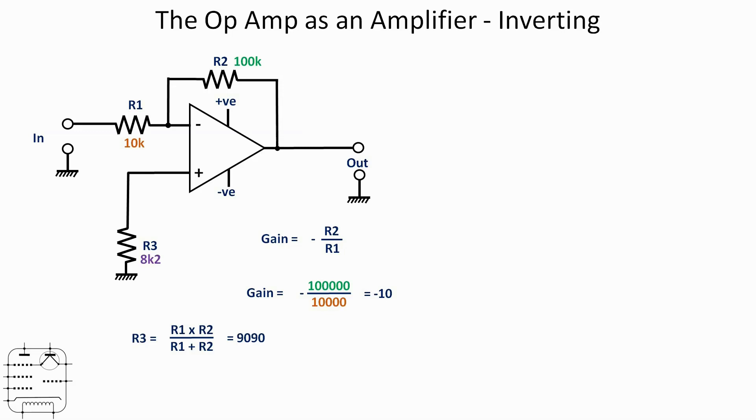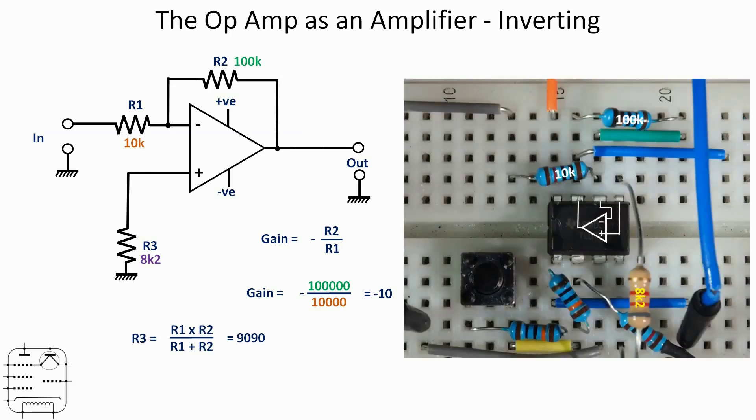Now I've used an 8k2 in this circuit, but I really could have used a 10k. I'm sure that would have also been completely acceptable. But just for completeness sake, that was the closest one I'd got to 9090 ohms.